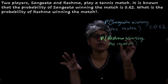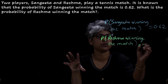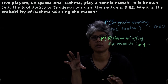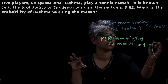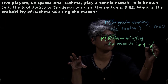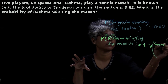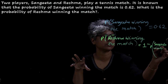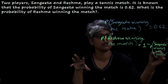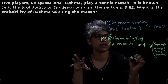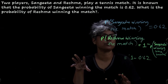P of Reshma winning the match — we will find out how to do it. That is equal to 1 minus P of Sangeeta winning the match. So that is equal to 1 minus 0.62.